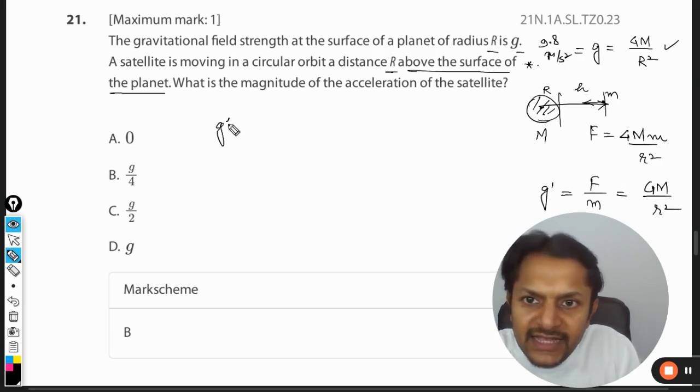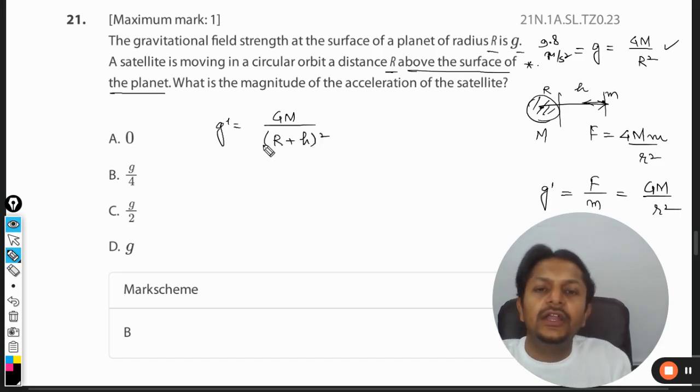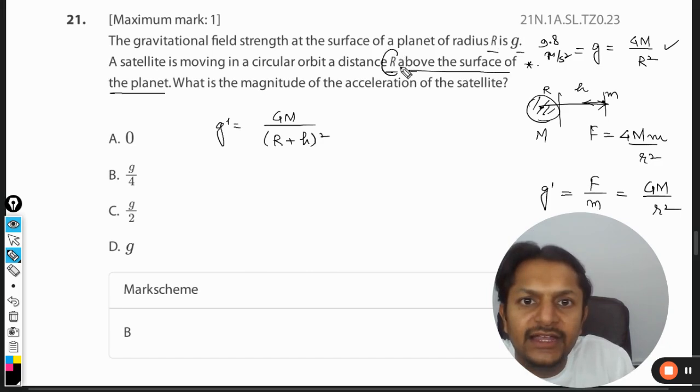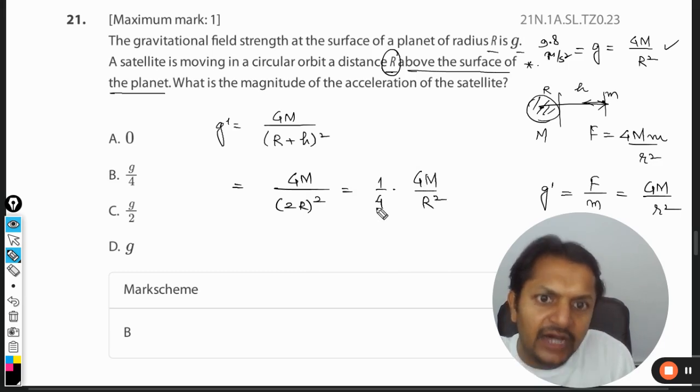So having said that, we can clearly write it as GM divided by r plus h whole square. Now what is the height? It says that the height is also r. So we will substitute r here and it will become 2r square. So it is 1 by 4 GM divided by r square.